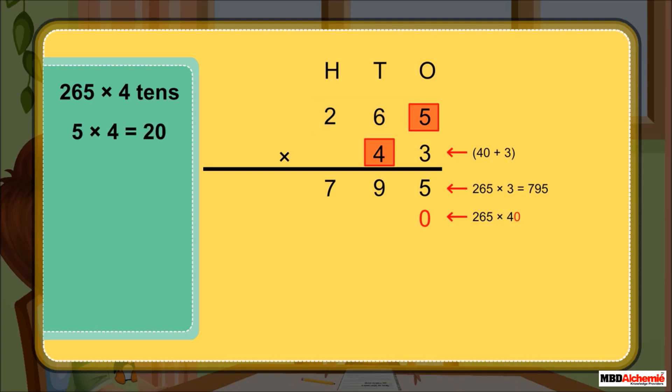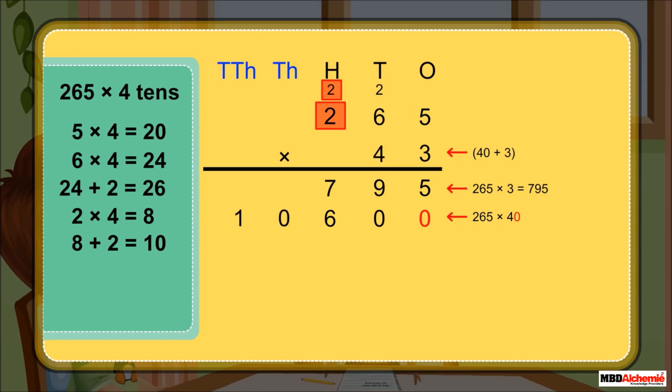5 times 4 is 20. Write 0 and carry over 2. 6 times 4 is 24, and 24 plus 2 carry over is 26. Write 6 and carry over 2. 2 times 4 is 8, and 8 plus 2 carry over is 10. Write 10. Thus, 265 times 40 is 10,600.